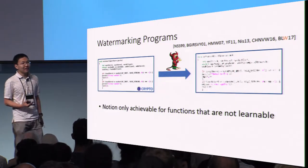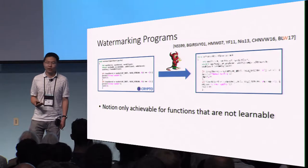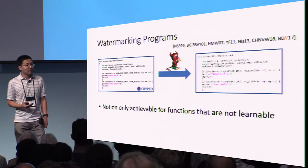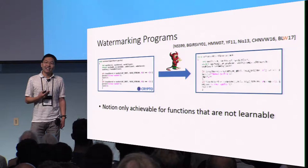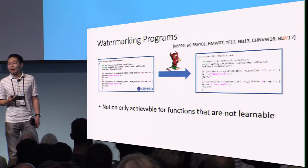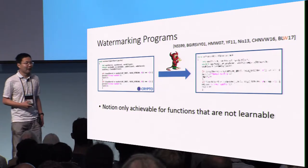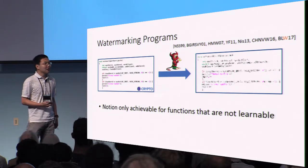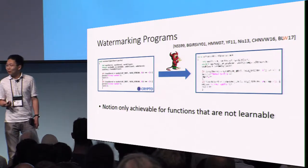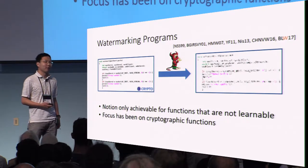The natural next question is: does a watermarking scheme exist? Can we watermark arbitrary programs? Unfortunately, there is a negative result. For any class of learnable functions, it's very easy to see that watermarking cannot possibly exist, because you can simply learn the function and remove the watermark. As a result, the study of watermarking for functionalities has focused on cryptographic functionalities, a natural class of hard-to-learn functions.